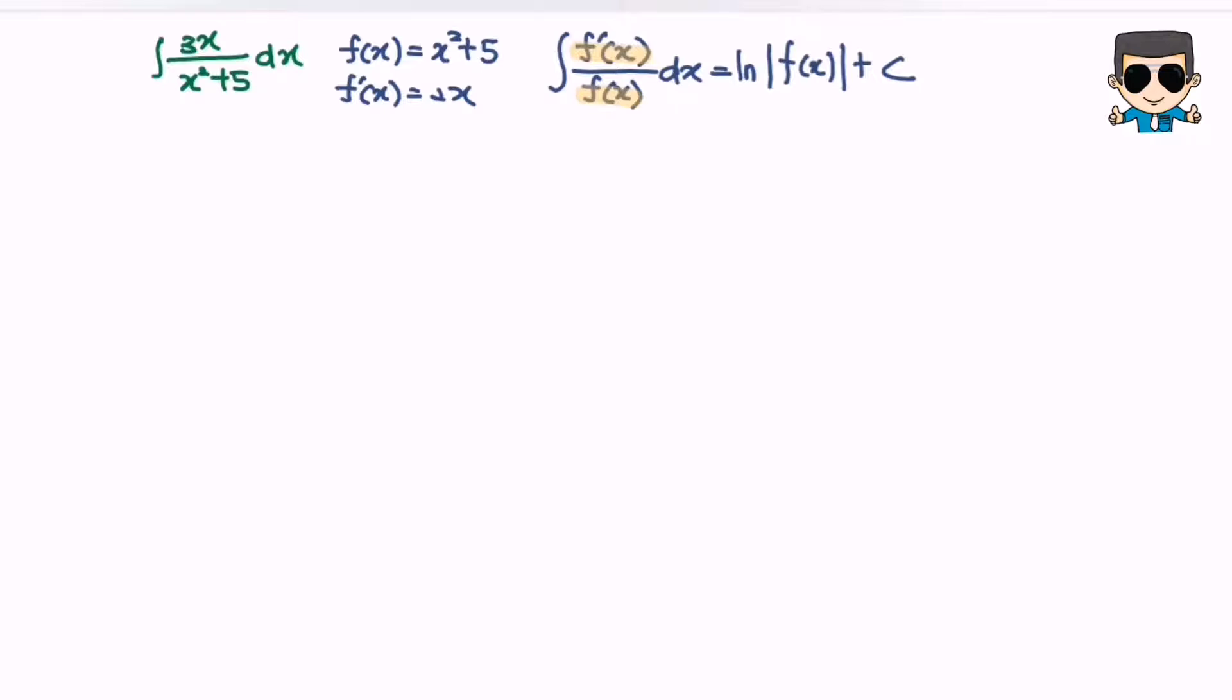So for this case we notice that the situation supposed to be 2x but in this case it is 3x. So it is not easy to use the special function. So my advice is use the substitution method.